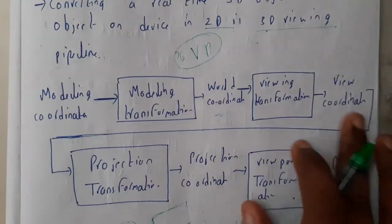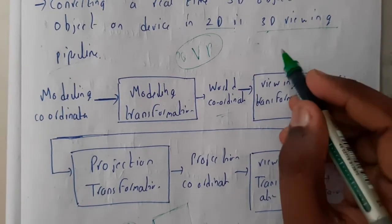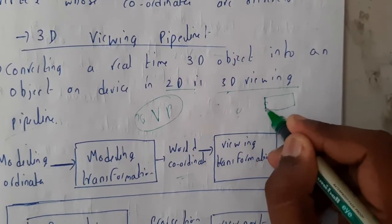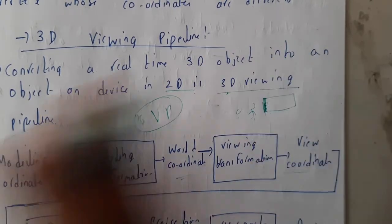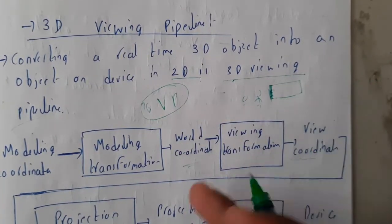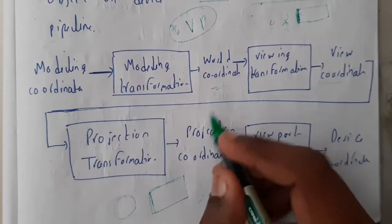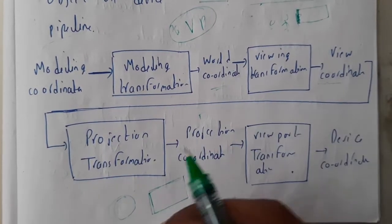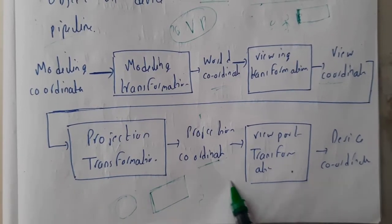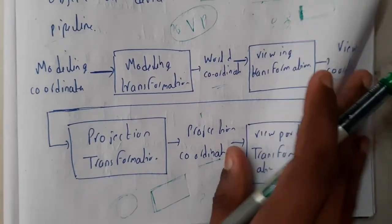After that you say, 'We are taking a group photo, please everyone assemble in one place.' They all assemble — that is the view coordinates. Even when assembled, one or two people may not fit in the frame, so they are clipped off — that is the clipping step. Then your friend says 'lower angle, upper angle, middle angle' — that is the projection coordinates. Finally, you fit everything into the device — that is the device coordinates.